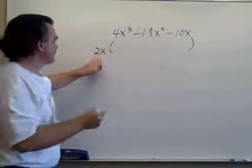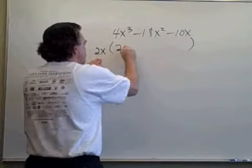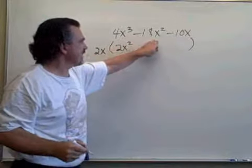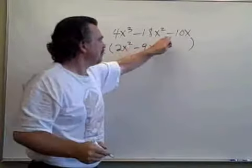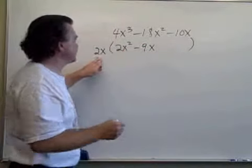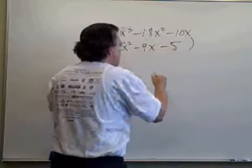4x cubed divided by 2x is going to leave me 2x squared. Minus 18x squared divided by 2x is going to be minus 9x. Minus 10x divided by 2x will leave me minus 5.